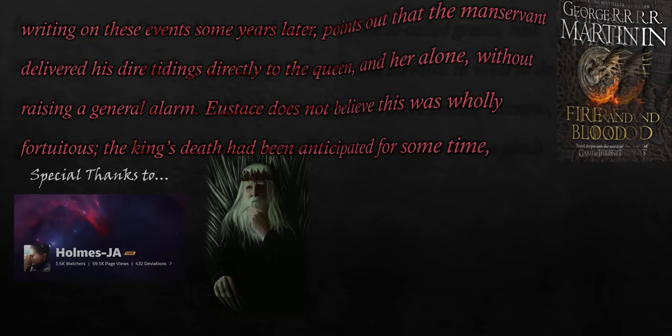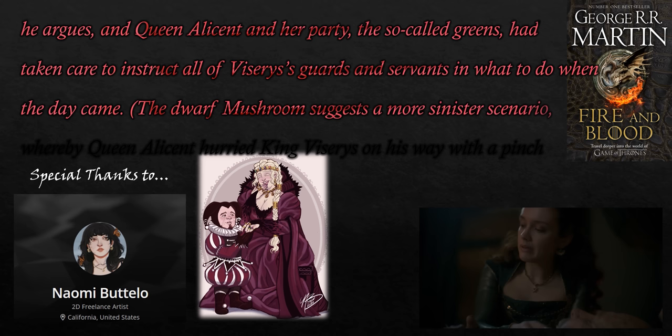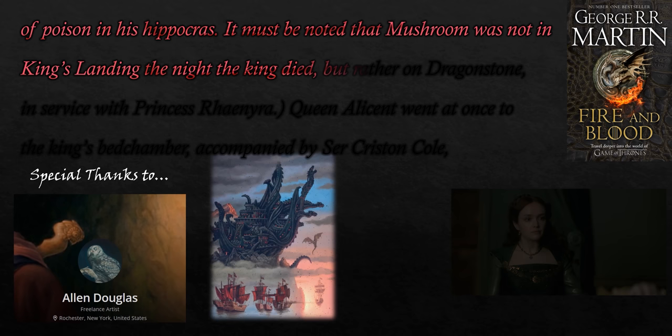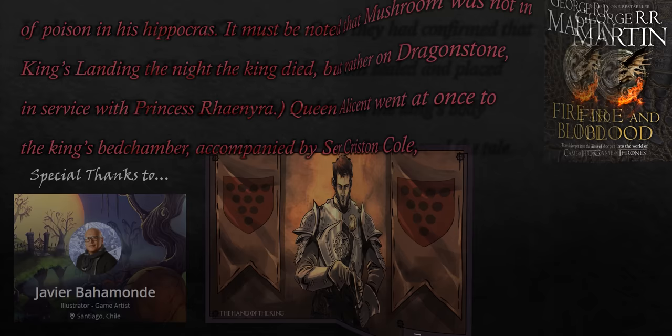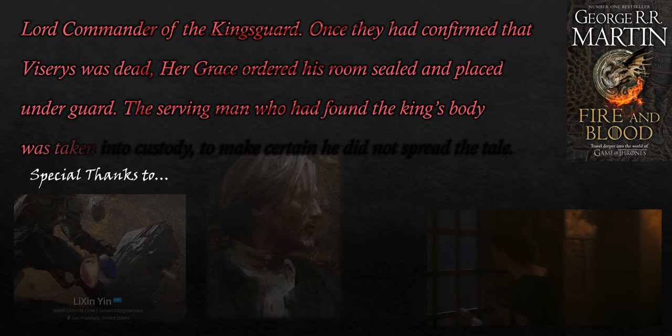Queen Alicent and her party, the so-called Greens, had taken care to instruct all of Viserys' guards and servants in what to do when the day came. The dwarf Mushroom suggests a more sinister scenario, whereby Queen Alicent hurried King Viserys on his way with a pinch of poison in his Hippocras. It must be noted that Mushroom was not in King's Landing the night the king died, but rather on Dragonstone, in service with Princess Rhaenyra. Queen Alicent went at once to the king's bedchamber, accompanied by Ser Criston Cole, Lord Commander of the Kingsguard. Once they had confirmed that Viserys was dead, Her Grace ordered his room sealed and placed under guard. The serving man who had found the king's body was taken into custody.